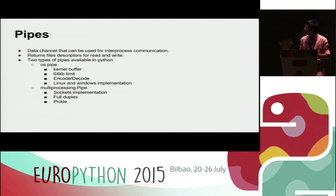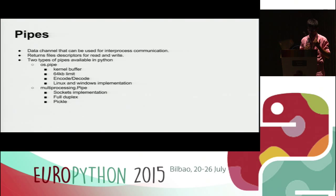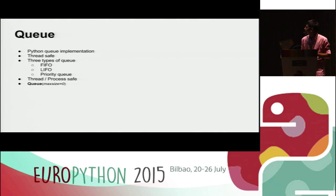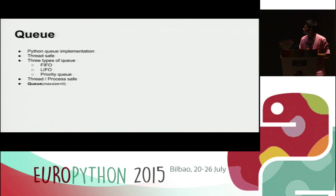multiprocessing.Pipe uses pickle to send data. Pickle is a way to serialize and send objects. Queue is also available and its implementation is thread-safe. Python supports three kinds of queues: FIFO (first in, first out), LIFO (last in, first out), and priority queues. Queues are both process-safe and thread-safe.